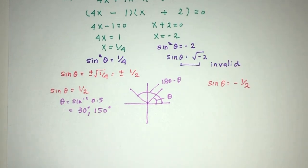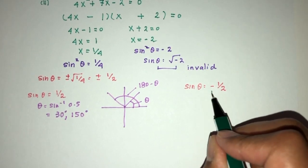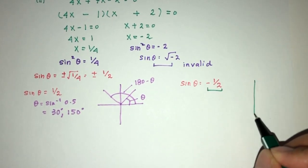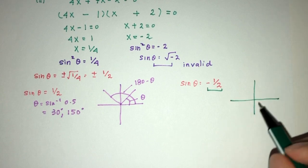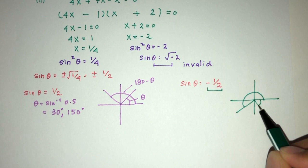Now, for this one right here, sinθ is negative. If it is negative, we realize that it has to be in the third quadrant and in the fourth quadrant.